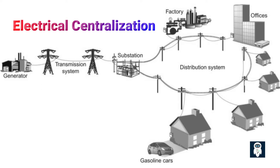factories, hospitals, schools, and other locations. However, this traditional approach had its limitations. The grid operated on a one-way flow of electricity, with power generated at centralized locations and distributed to consumers.